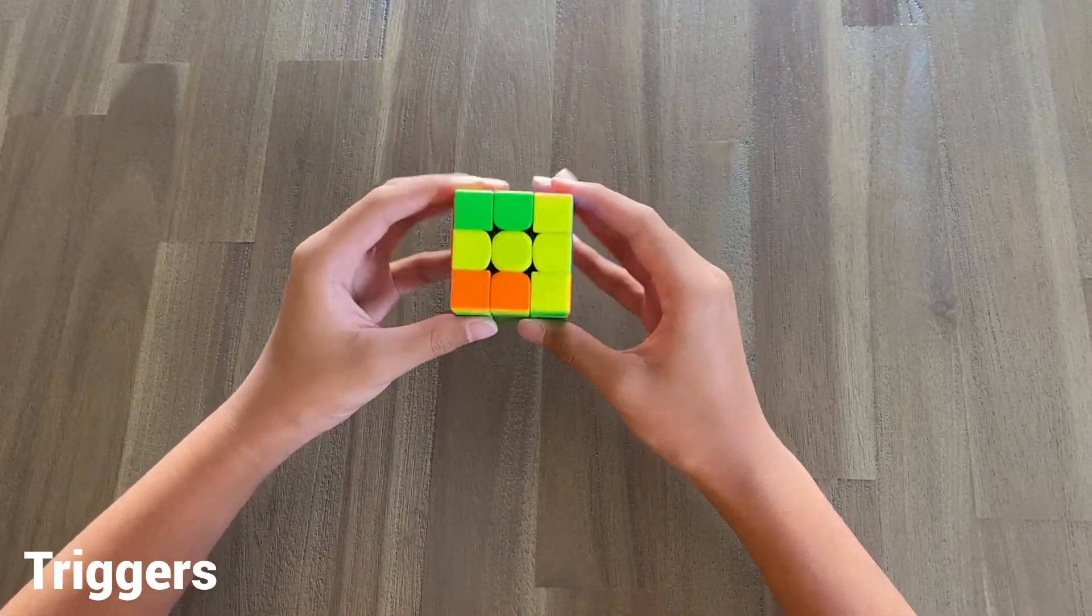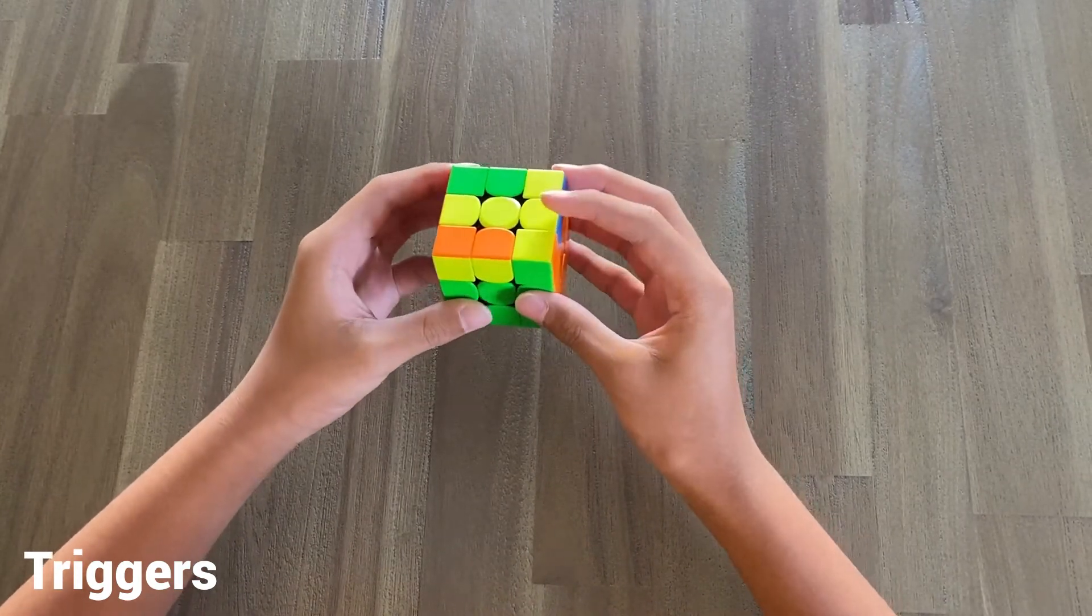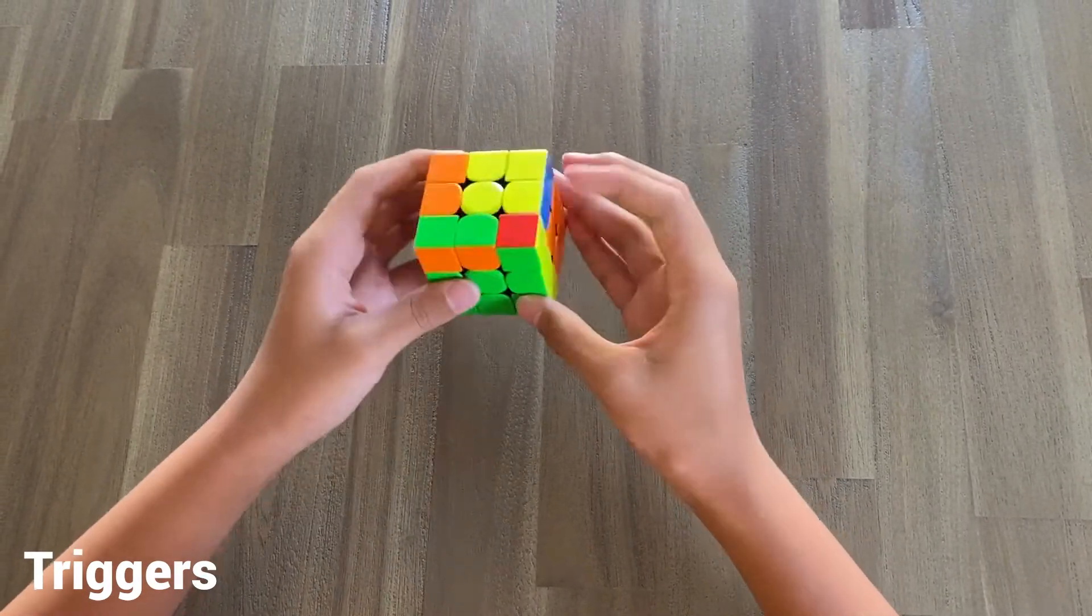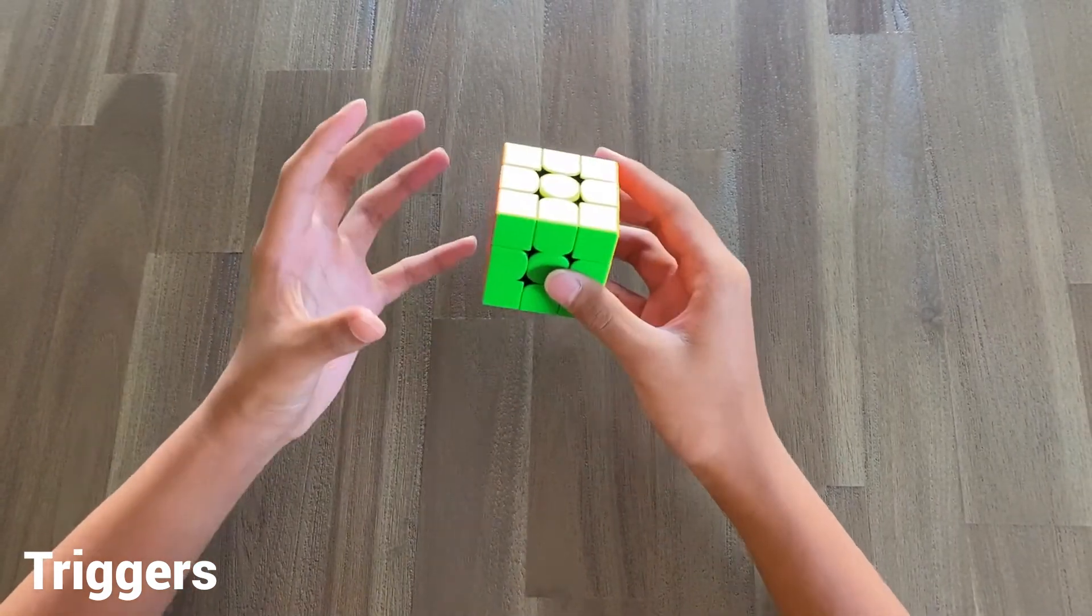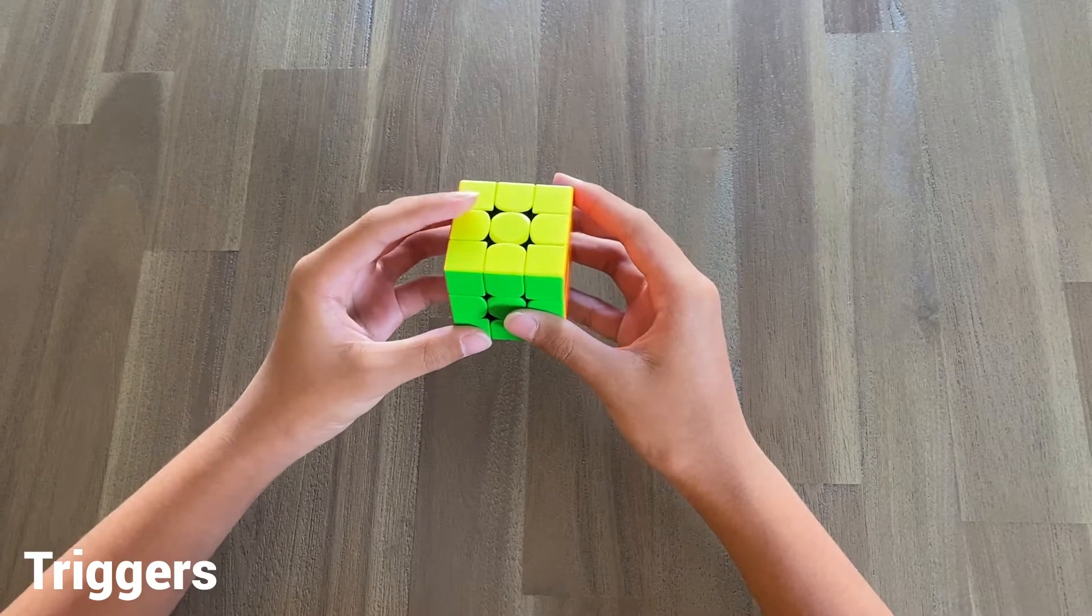However, in algorithms such as this one, this TOLL, we start by doing this. As you can see, we end with a sledgehammer. So basically, most algorithms are composed of smaller triggers.